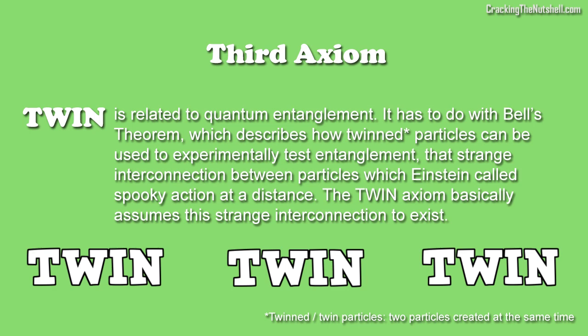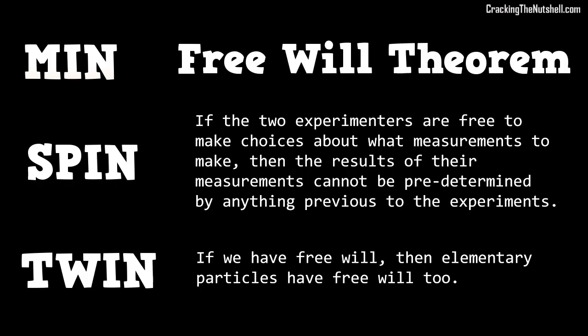Finally, the last axiom, called TWIN, is related to quantum entanglement. It has to do with Bell's theorem, which describes how twinned particles can be used to experimentally test entanglement — that strange interconnection between particles which Einstein called spooky action at a distance. The TWIN axiom basically assumes this strange interconnection to exist. From these three axioms, Conway and Kochen derive their free will theorem, which states that if the two experimenters are free to make choices about what measurements to make, then the results of their measurements cannot be predetermined by anything previous to the experiments.